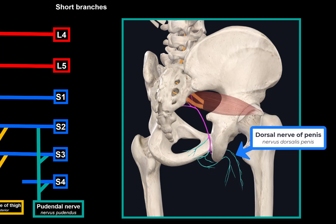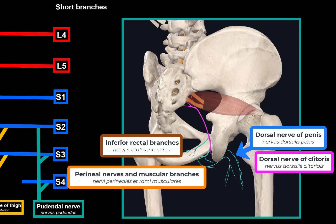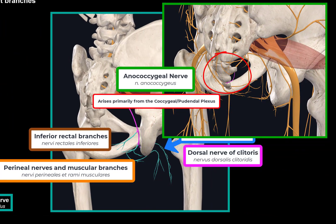The pudendal nerve terminates as either the dorsal nerve of the penis or dorsal nerve of the clitoris. Its three main side branches are: the inferior rectal branches, innervating the external anal sphincter and skin around the intergluteal crest; the perineal nerves, supplying all perineal muscles and skin, terminating as posterior scrotal nerves in men or posterior labial nerves in women; and the anococcygeal nerve, supplying skin in the region of the coccygeal bone.